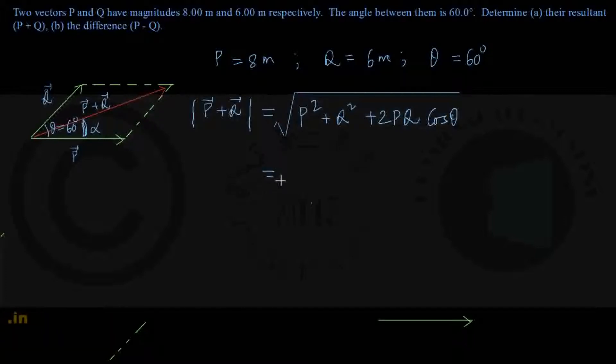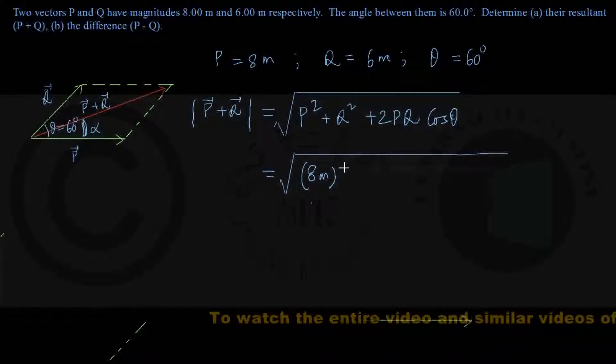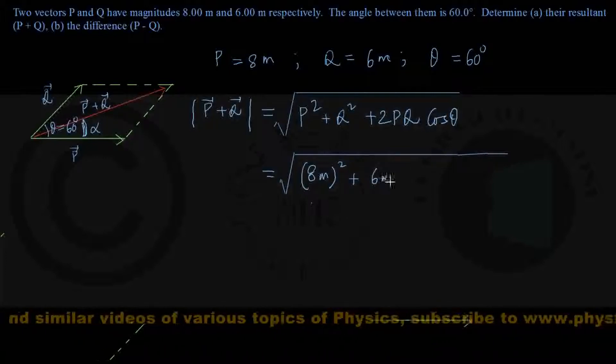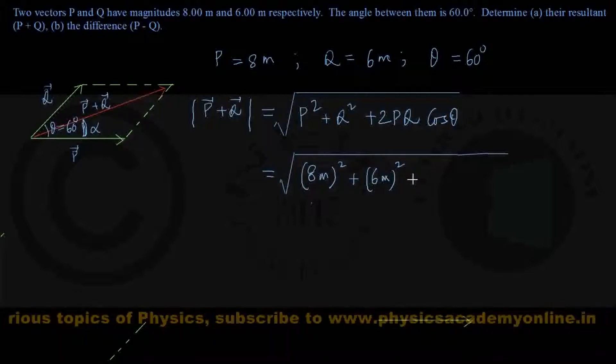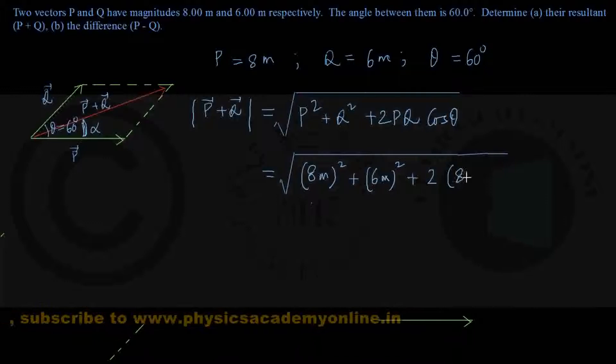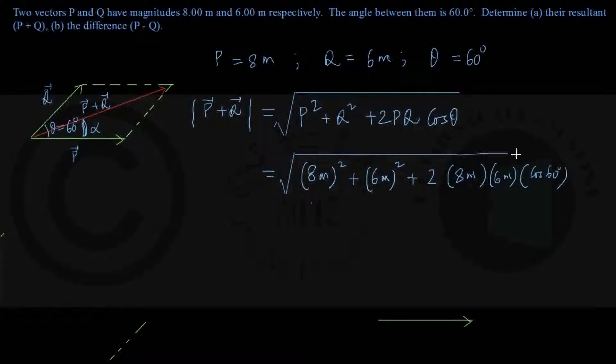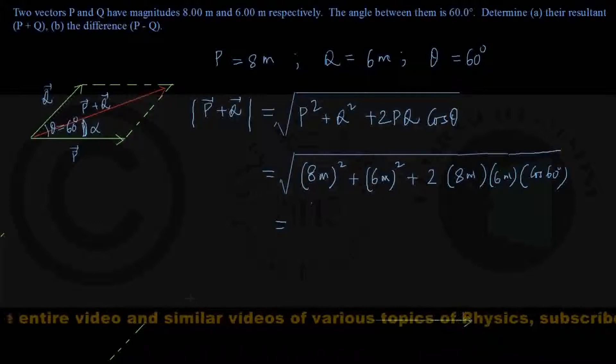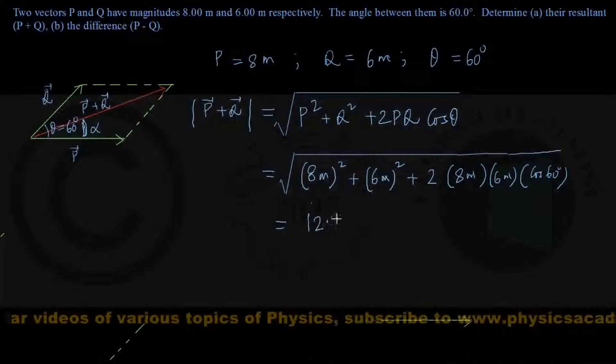Now putting in the values: square root of 8 meters squared plus 6 meters squared plus twice times 8 meters times 6 meters times cosine 60 degrees. After calculating—and you should confirm this yourself—the value comes out to three significant figures as 12.2 meters. That is the magnitude of the vector sum or resultant P plus Q.